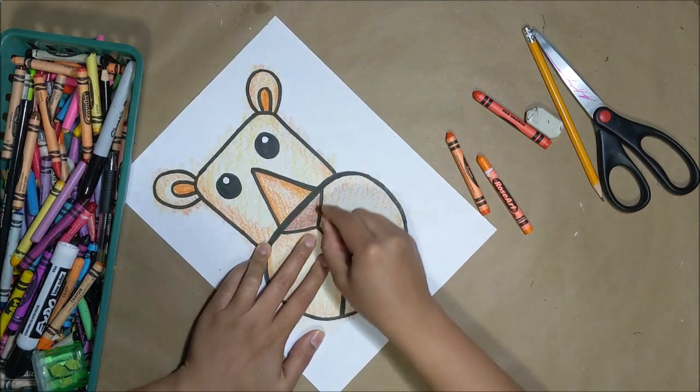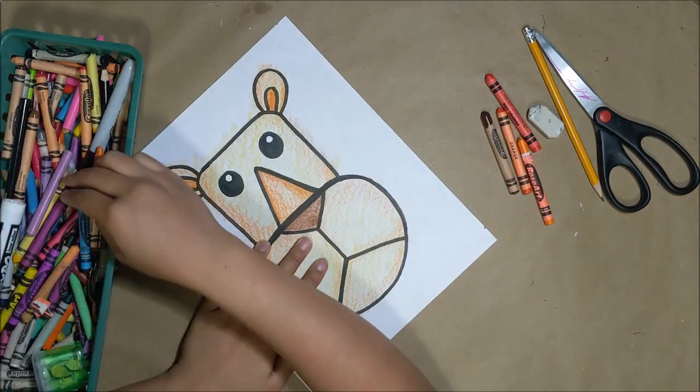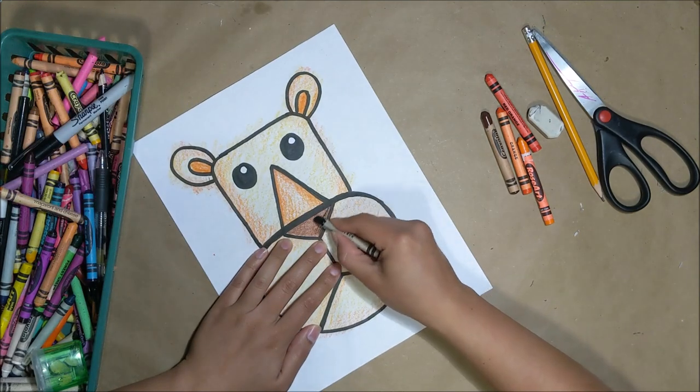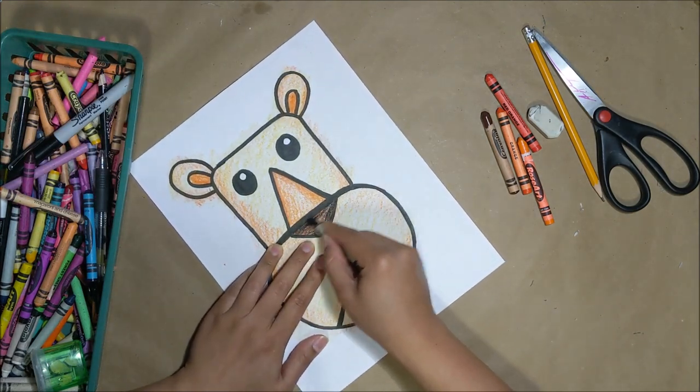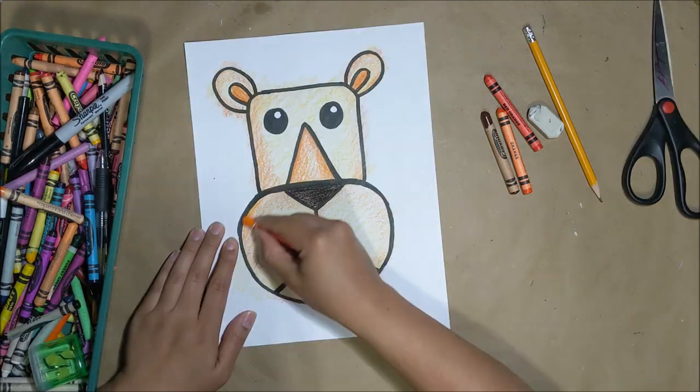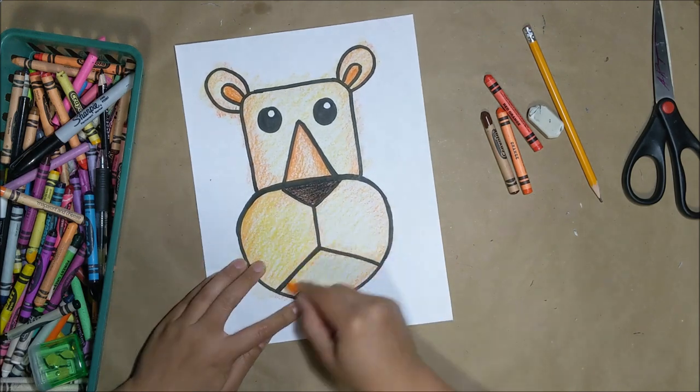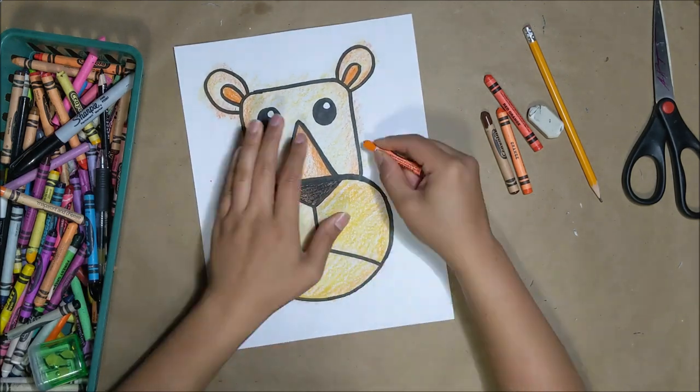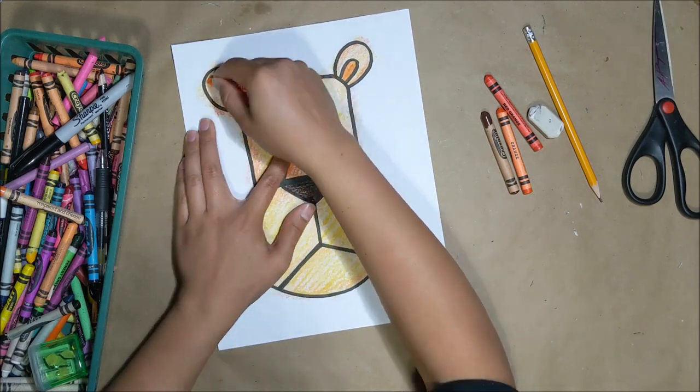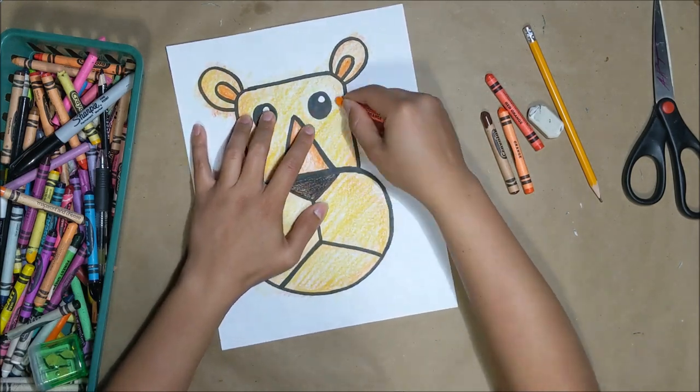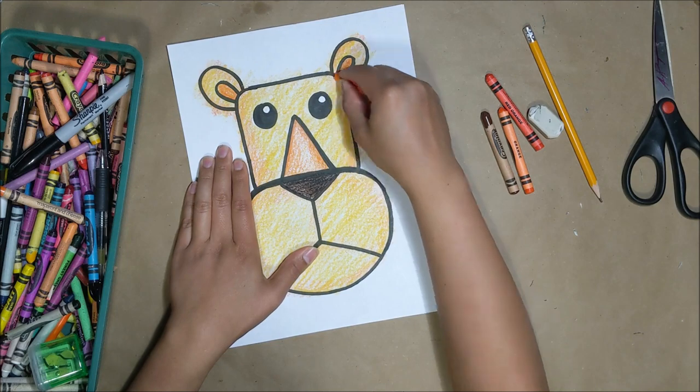Now I'm going to go inside the nose and color it brown. Then I'll add my black crayon right on top to create a brown black color. To brighten this lion's face up a little bit I'm taking my yellow orange and adding another layer on top of everything.